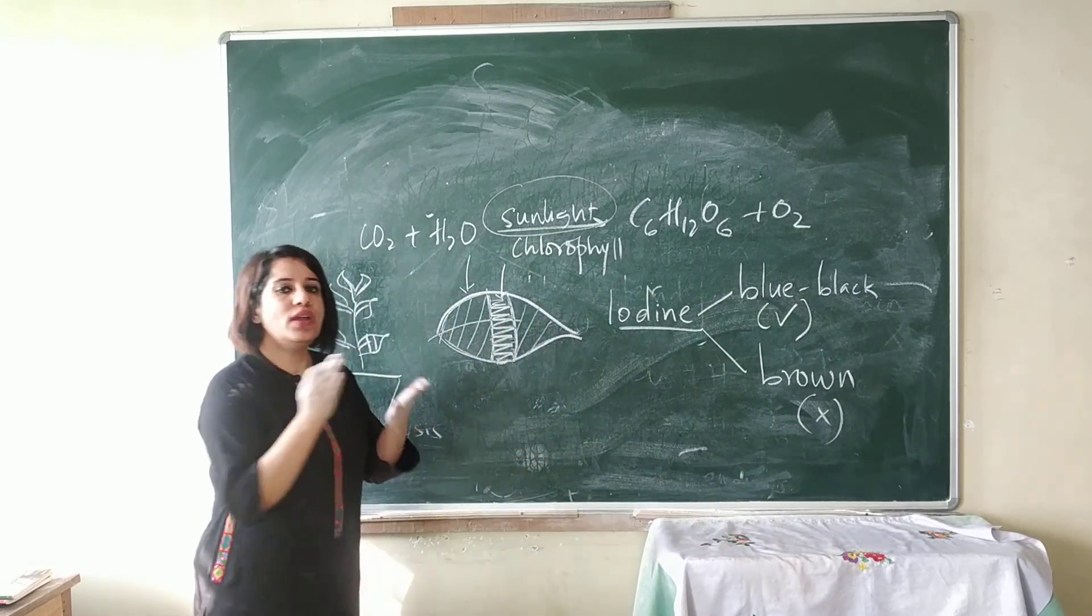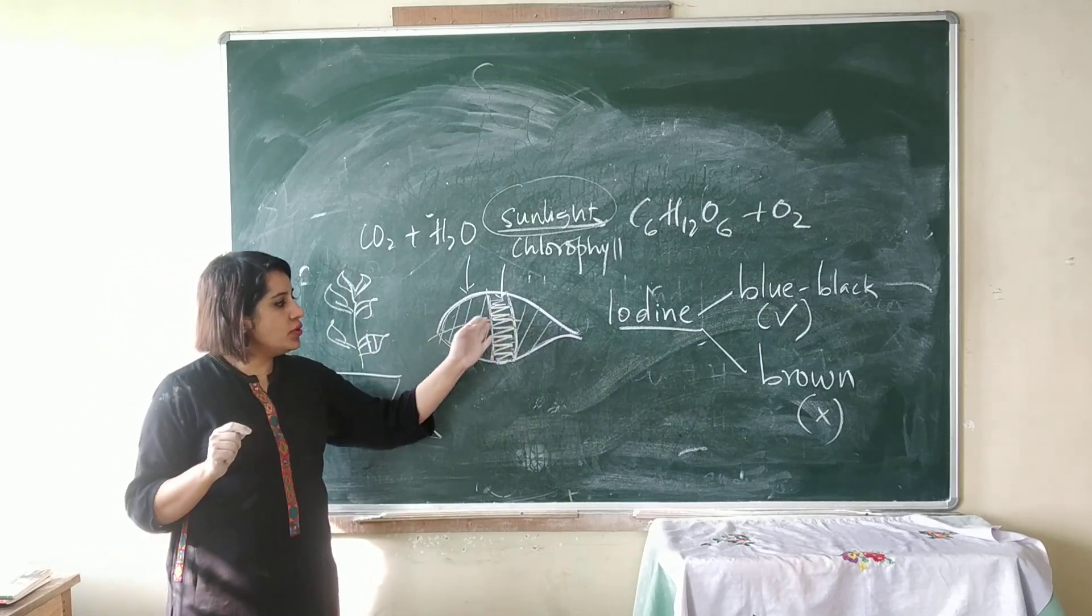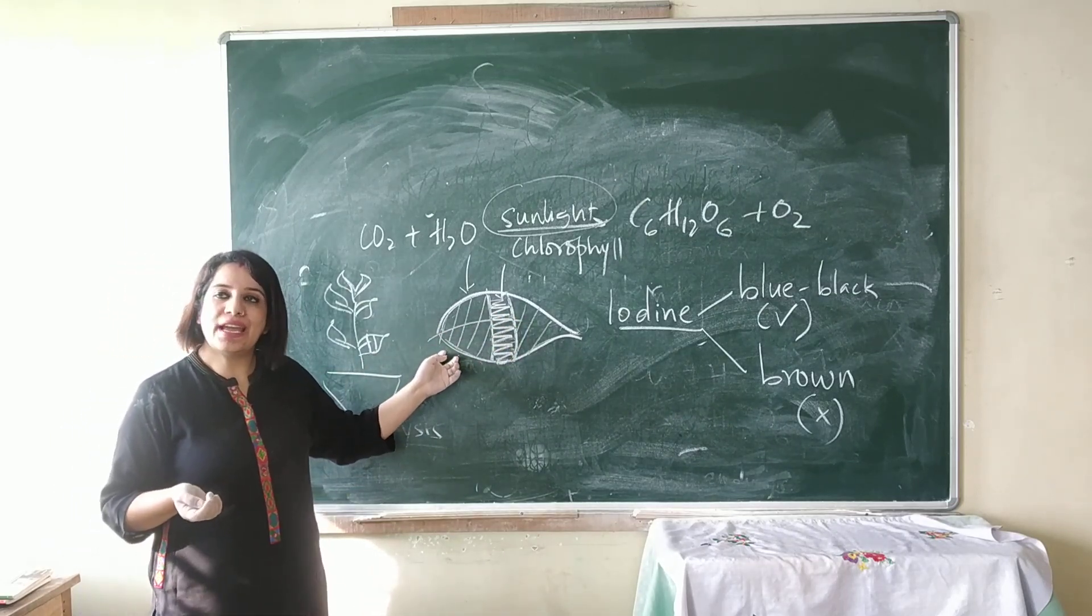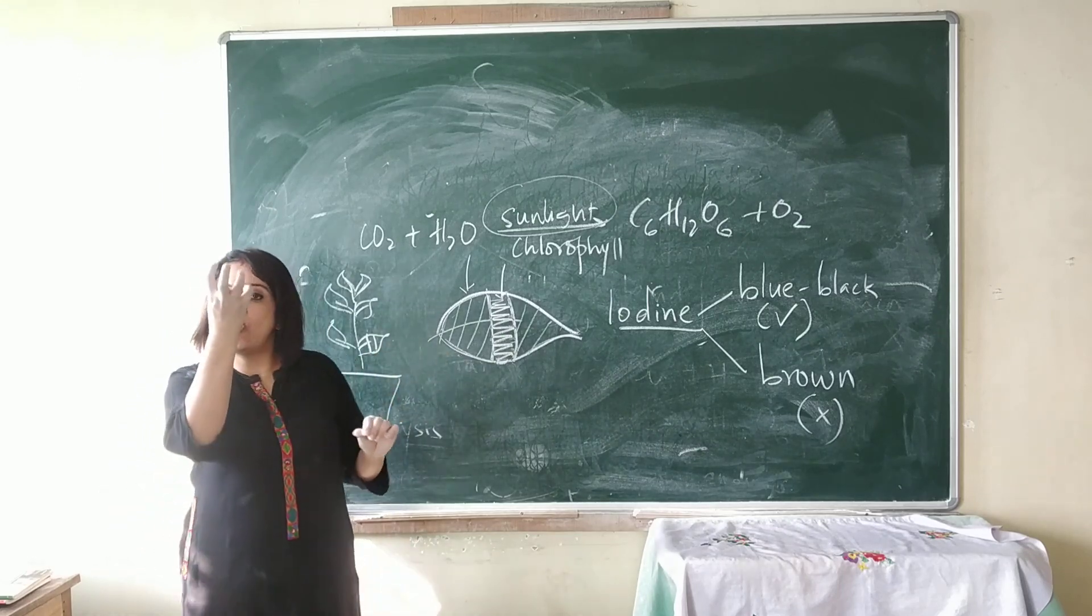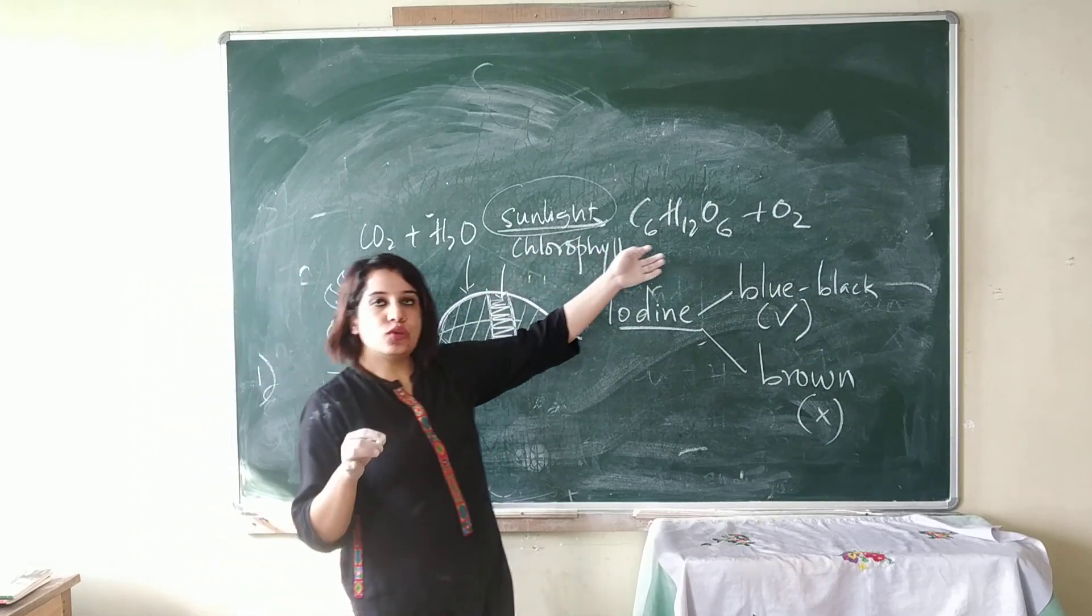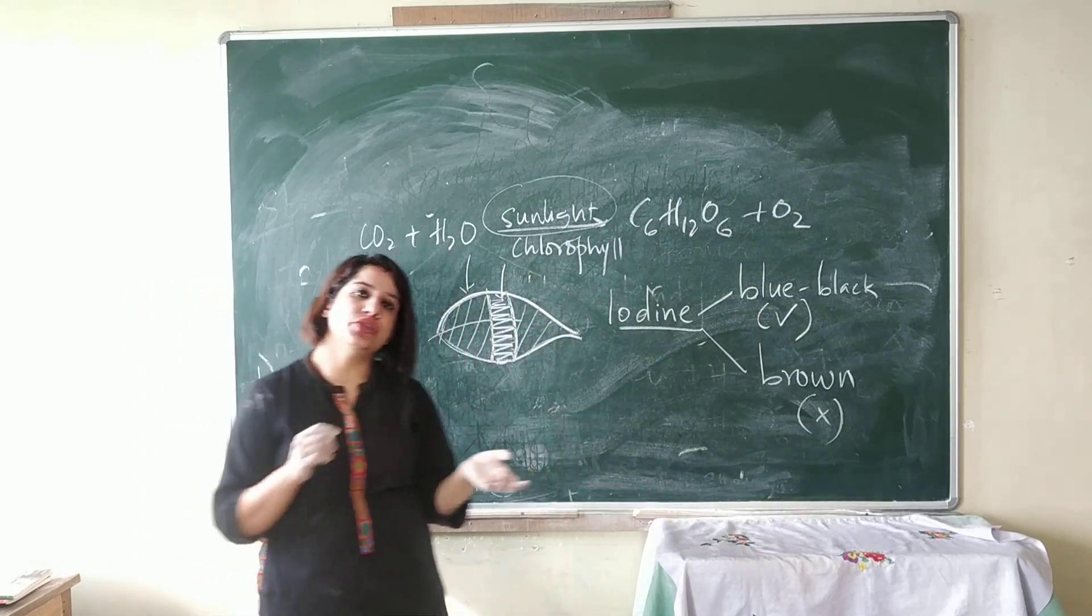What happened is, when the plant was kept in sunlight, the uncovered portion received sunlight. The chlorophyll could absorb sunlight and photosynthesis occurred, so glucose was formed and excess glucose was converted into starch.